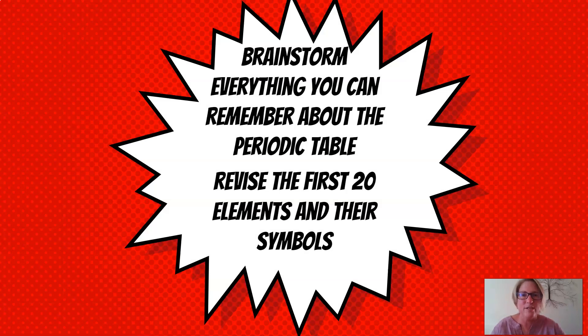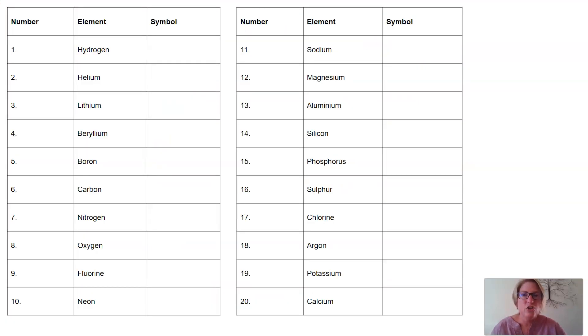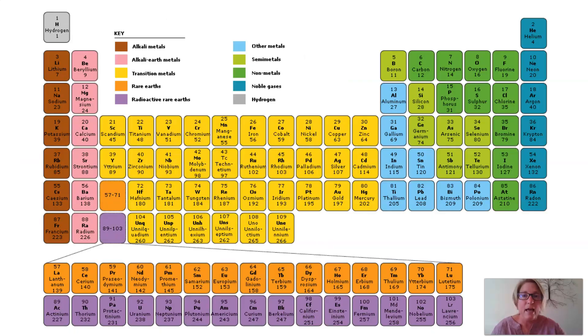Just a little sneak peek into tomorrow's lesson. What you can do so that you can be better prepared for the lesson is can you brainstorm everything that you can remember about the periodic table that you would have covered in grade 7 and grade 8? And if possible, can you revise the first 20 elements and their symbols? To help you on your way, I've prepared a table like this. So you can always pause the screen and you can just copy down the numbers and the names of the elements, and you can then use the periodic table to find the symbols. And in case you don't have a periodic table handy, here is a periodic table. Again, you can just pause the screen and I hope that helps you prepare for next lesson.